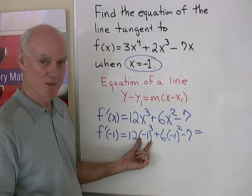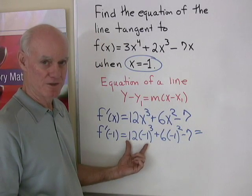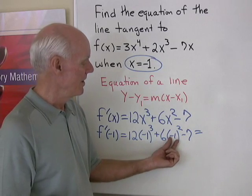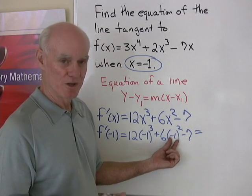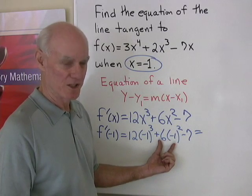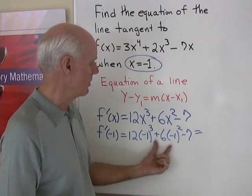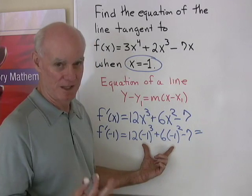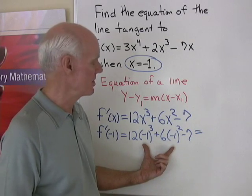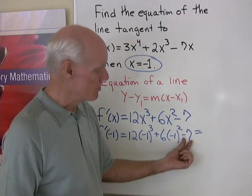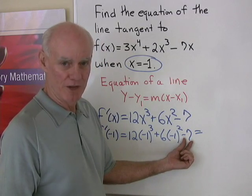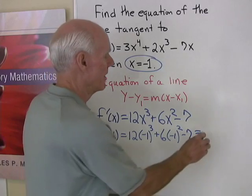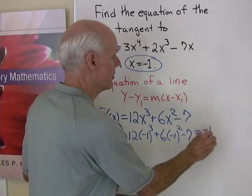Negative 1 cubed is negative 1, times 12 is negative 12. Negative 1 squared is 1, times 6 is 6. So I get negative 12 plus 6, that comes out to be negative 6. Subtract 7 — negative 6 plus negative 7 is negative 13.